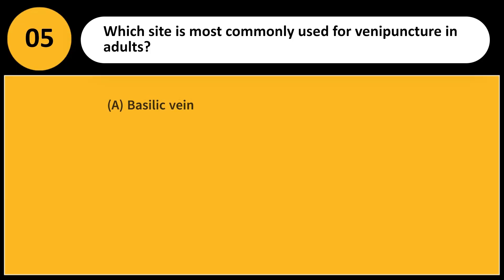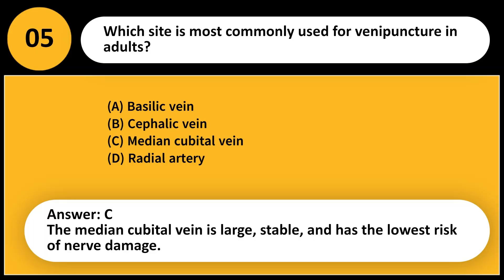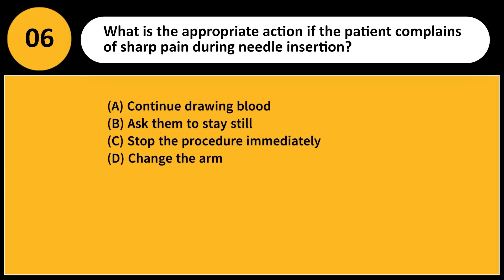Which site is most commonly used for venipuncture in adults? A. Basilic vein. B. Cephalic vein. C. Median cubital vein. D. Radial artery. Answer: C. The median cubital vein is large, stable, and has the lowest risk of nerve damage.